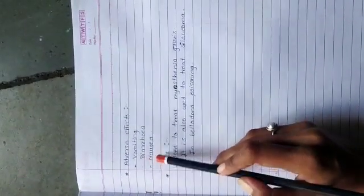Irreversible means parathion and malathion. Adverse effects include vomiting, diarrhea, and nausea.